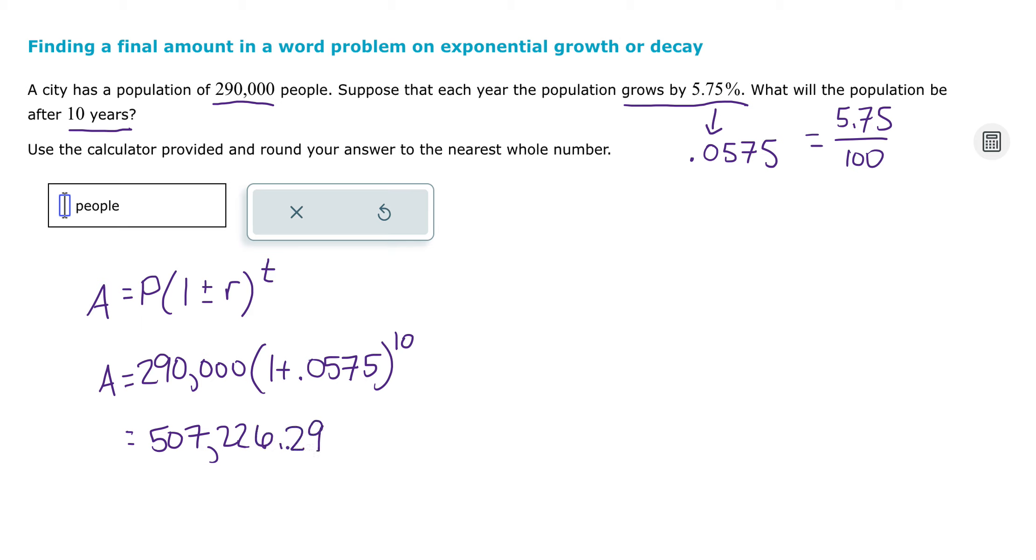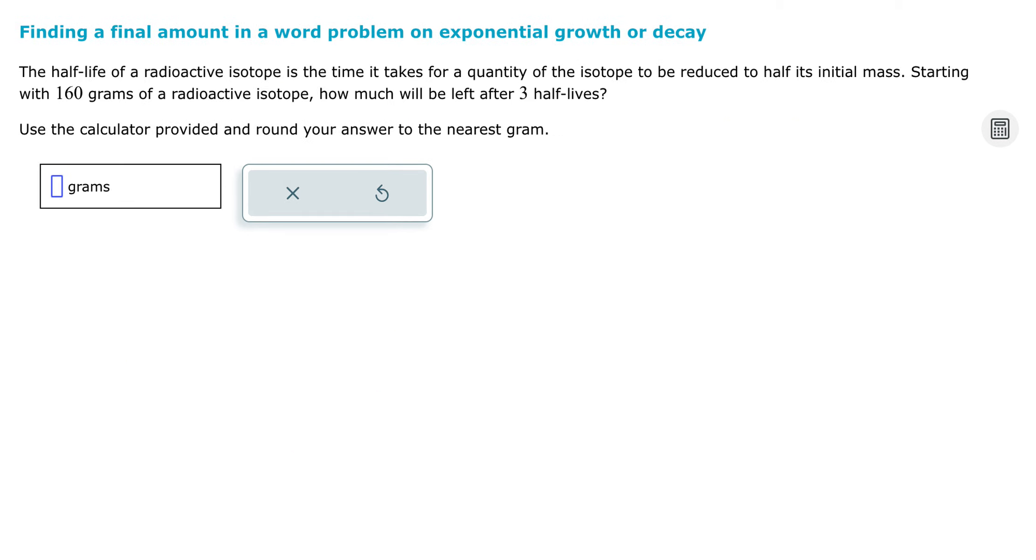So rounding to the nearest whole number, since 0.29 is less than 0.5, it would round down to 507,226. The problems in this category are all fairly similar to this except for one problem type that's a little bit different. So I'm going to show this one.